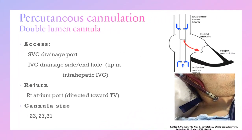The double-lumen cannula can be used in VV ECMO. It is inserted in the right internal jugular vein, similar to a hemodialysis catheter. It has two ports — one for drainage and one for return of oxygenated blood. In cross-section, the drainage port sits in the superior vena cava and inferior vena cava, while the return port is in the right atrium directed toward the tricuspid valve. Cannula sizes range from 23, 27, to 31 French.